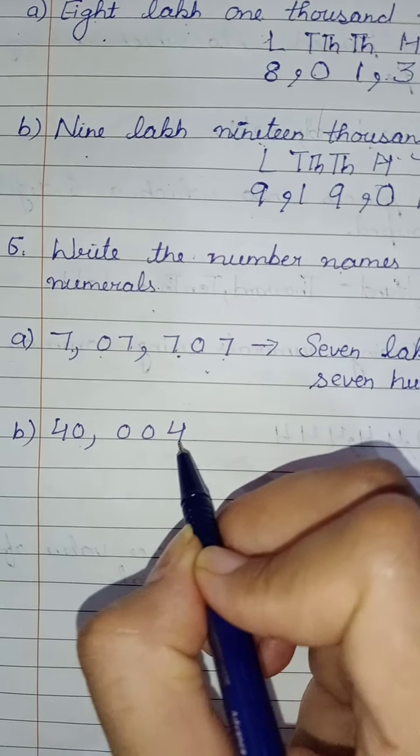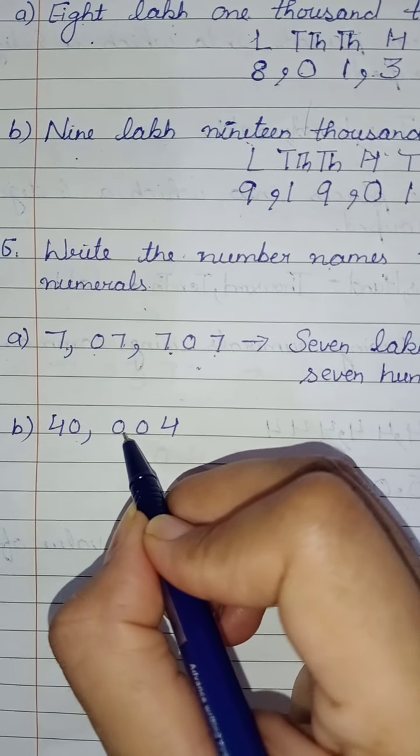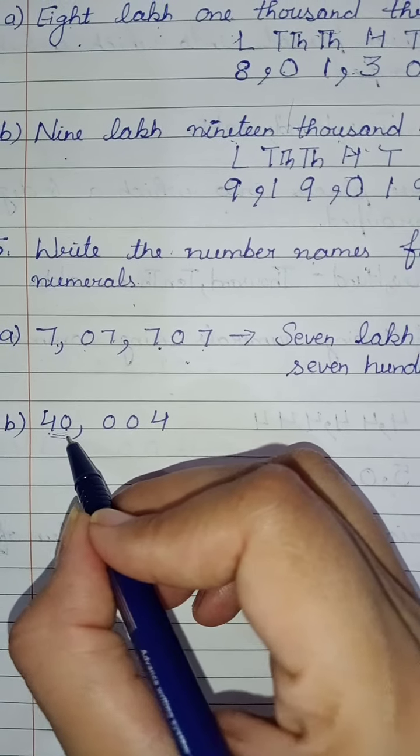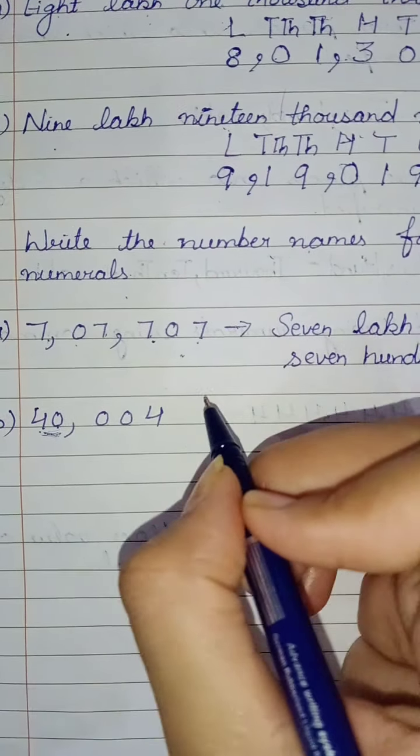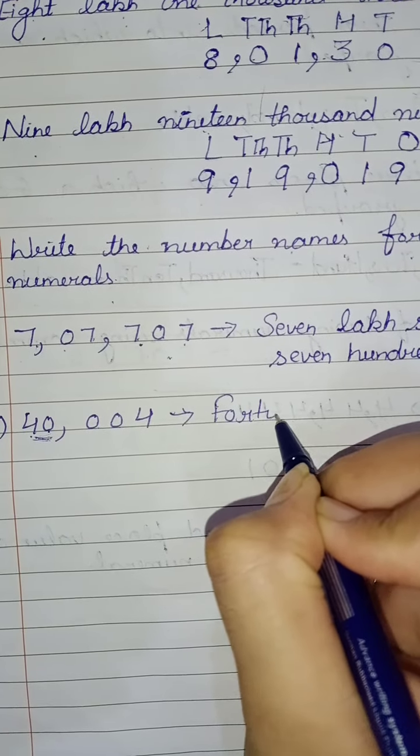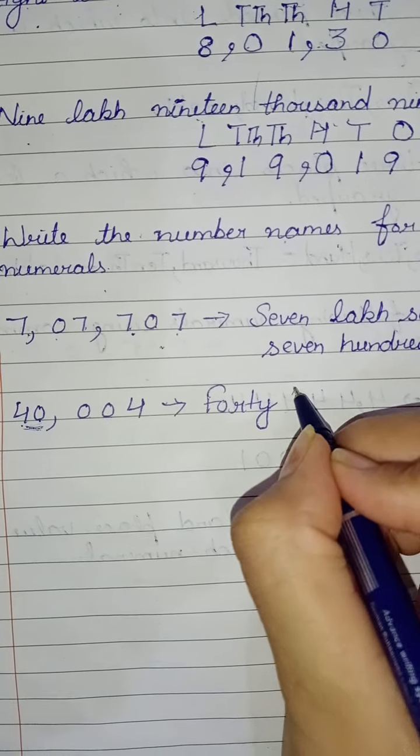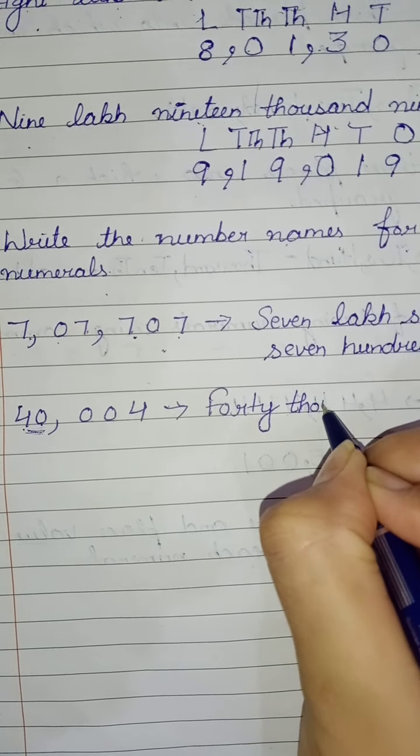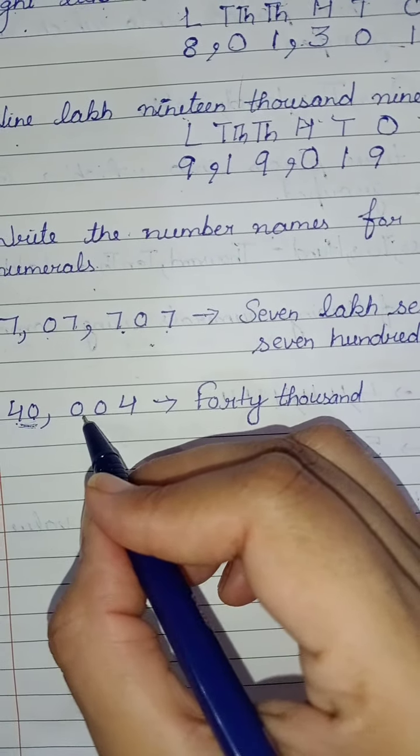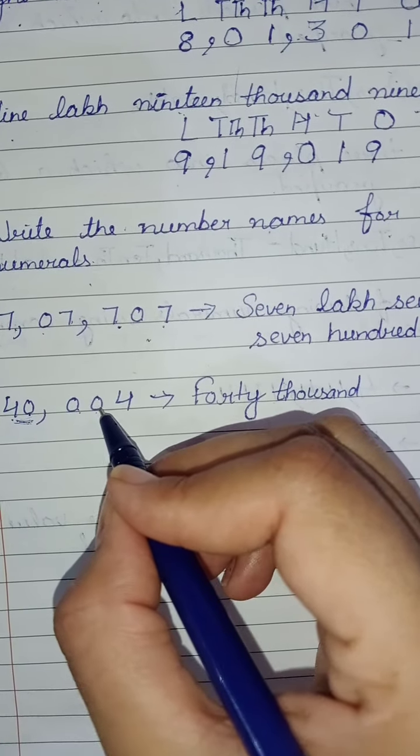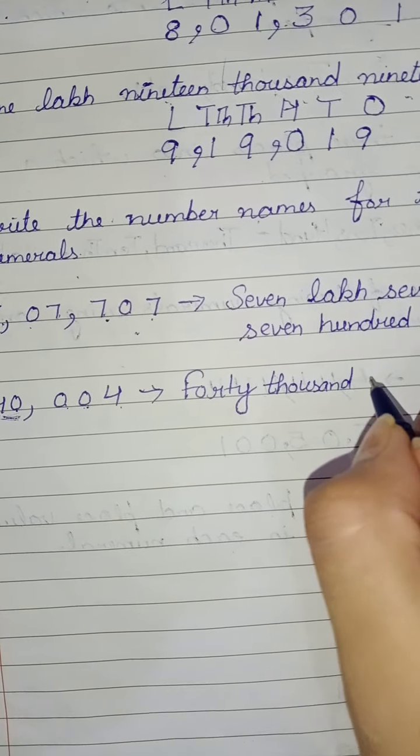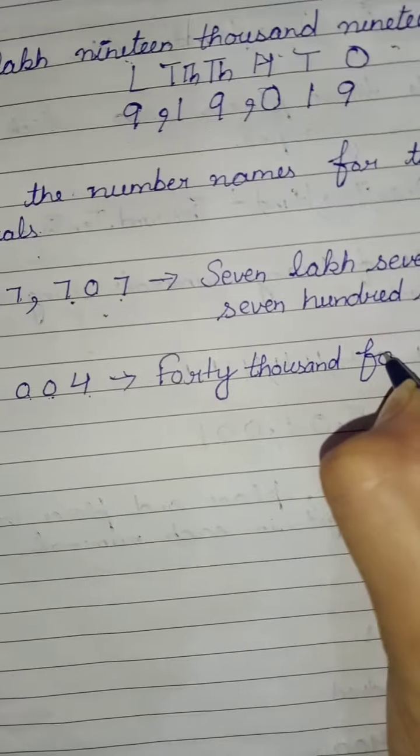Last part: ones, tens, hundreds, thousands, ten thousands. Now there is no lakh, only ten thousands and thousands family has 4, 0, 4, 0, 0. You all know 40 is forty. Where is 40? In the thousands family: forty thousand. Here also 0, here also 0. Hundreds has 0, tens has 0, only ones has 4. So this becomes forty thousand four.